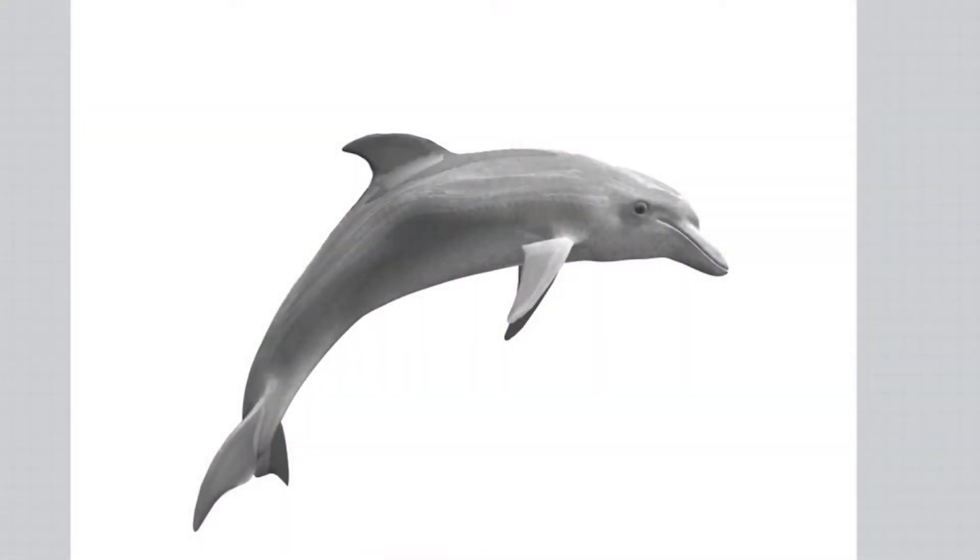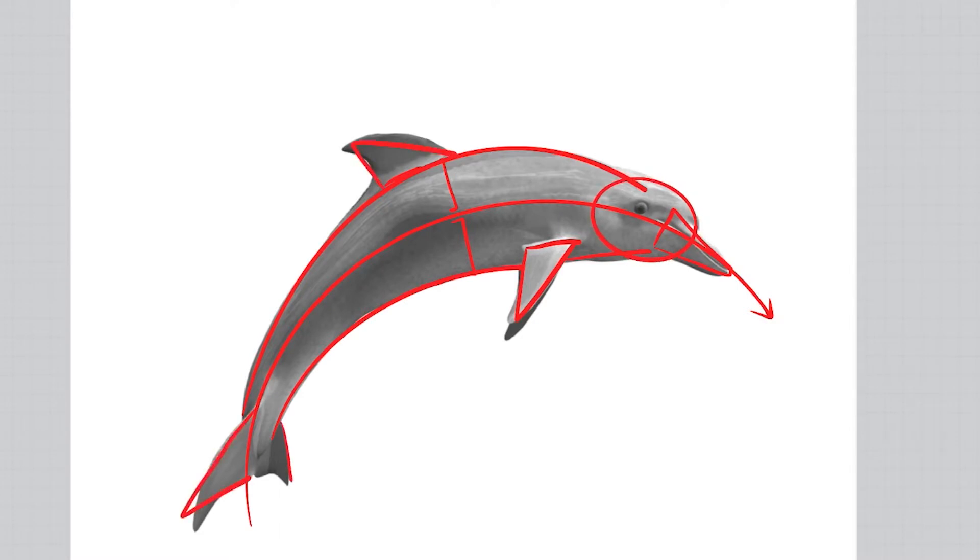Let's break down the body of a dolphin into simple lines and shapes. The guideline will be a curve like this. Then we can see that the distance between the back to the guideline and the belly to the guideline is the same. Sketch where the back and the belly would be. These lines follow the direction of the curve. The fin and the nose look like triangles. And the head looks like an oval. The back fin and the tail look like triangles as well.